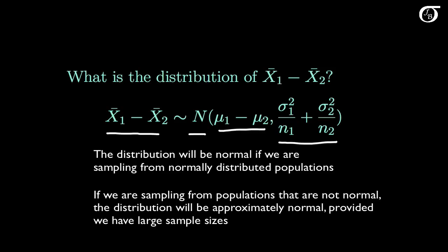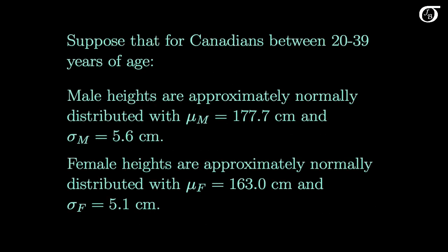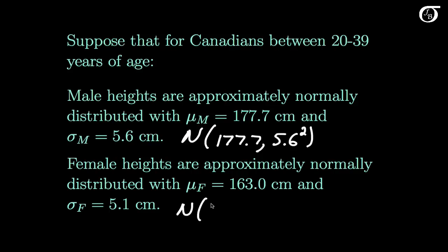Let's look at how we might use this in probability calculations. Suppose that for Canadians between 20 and 39 years of age, male heights are approximately normally distributed with a mean of 177.7 cm and a standard deviation of 5.6 cm — so approximately normal with mean 177.7 and variance 5.6 squared. Similarly, female heights are approximately normal with a mean of 163.0 cm and a variance of 5.1 squared. We'll assume these values to be true for the following probability calculations.